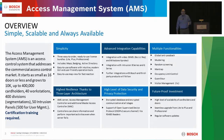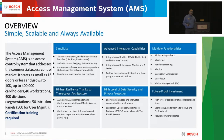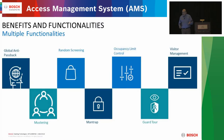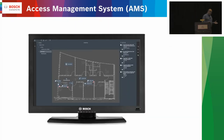Simplicity is an easy three-package offering. We have all the mainstream features you would expect in an access platform, and many of them are inclusive. We have your global anti-passback, mustering, random screening, man trap, guard tours, and interactive maps — all part of the platform, so there's not an extra license for those particular features.